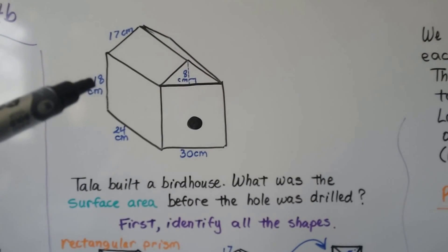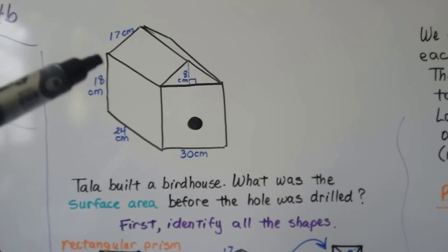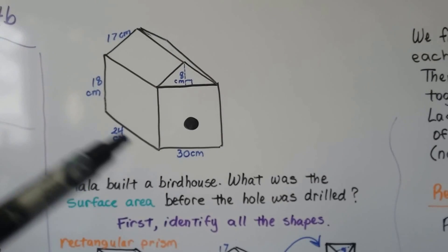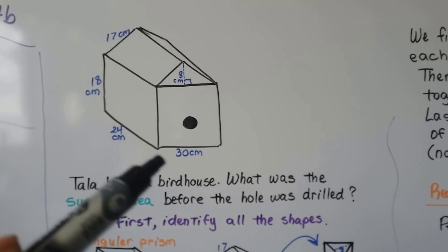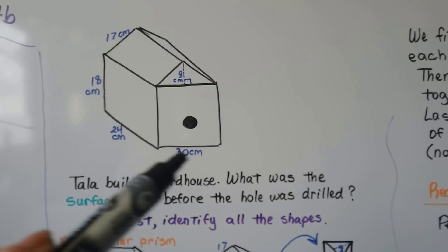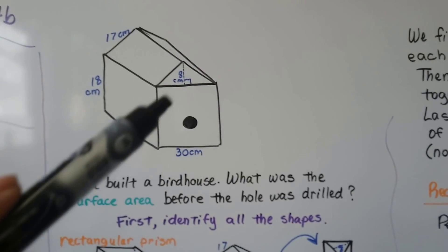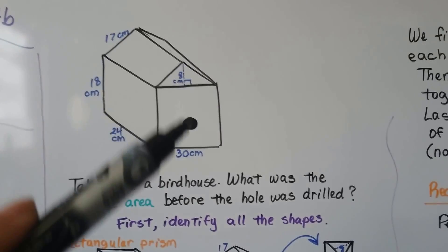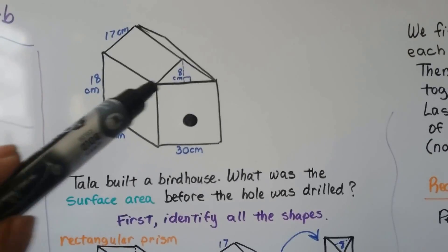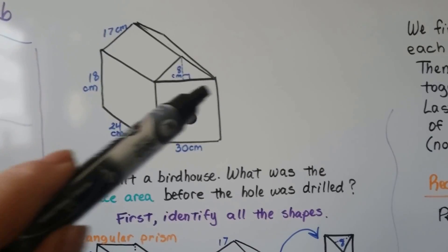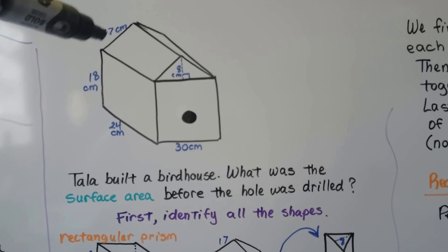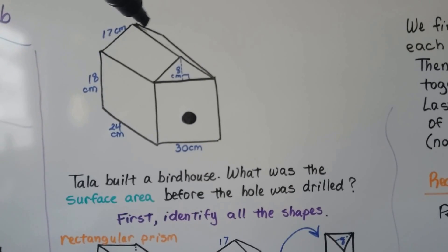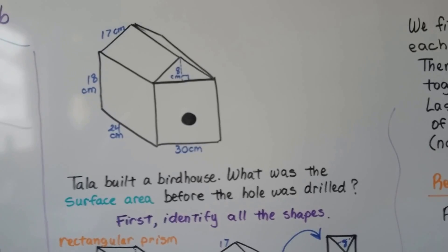When we look at all the measurements, we can see there's a height of 18 centimeters, 24 centimeters here, and it's 30 centimeters wide — which also means that back side is 30 centimeters. If that's 30 centimeters, then this line is 30 centimeters. This part of the roof is 17, and that means that other part of the roof is 17 as well.